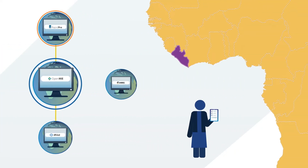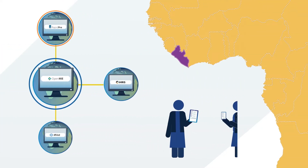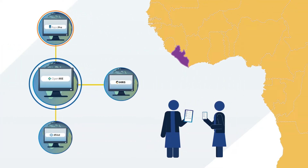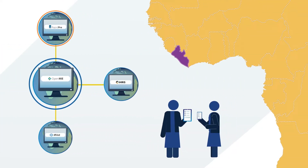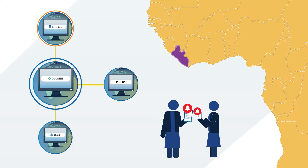In Liberia, RapidPro connects through an architecture to pull facility data from DHIS2 and human resources data from IRIS to identify specific health workers to message.